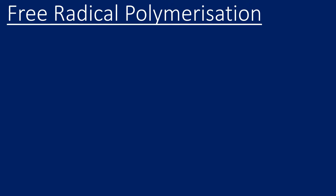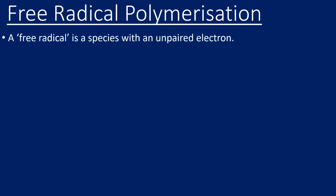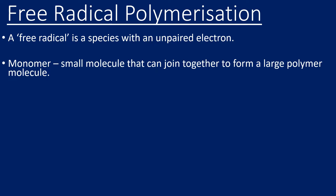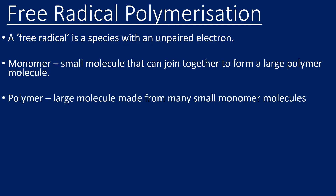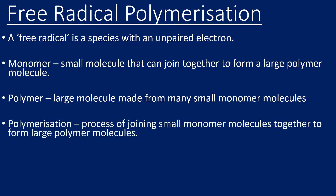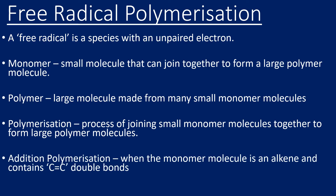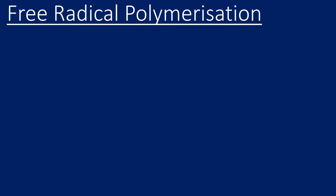Let's start with free radical polymerization. A free radical is a species with an unpaired electron — we've seen that in the reactions of alkanes. A monomer is a small molecule that can join together to form a large polymer. A polymer is the large molecule made from many small monomers. Polymerization is the process of joining monomers together. Addition polymerization, or free radical polymerization, is when the monomer molecule is an alkene containing a carbon-carbon double bond.